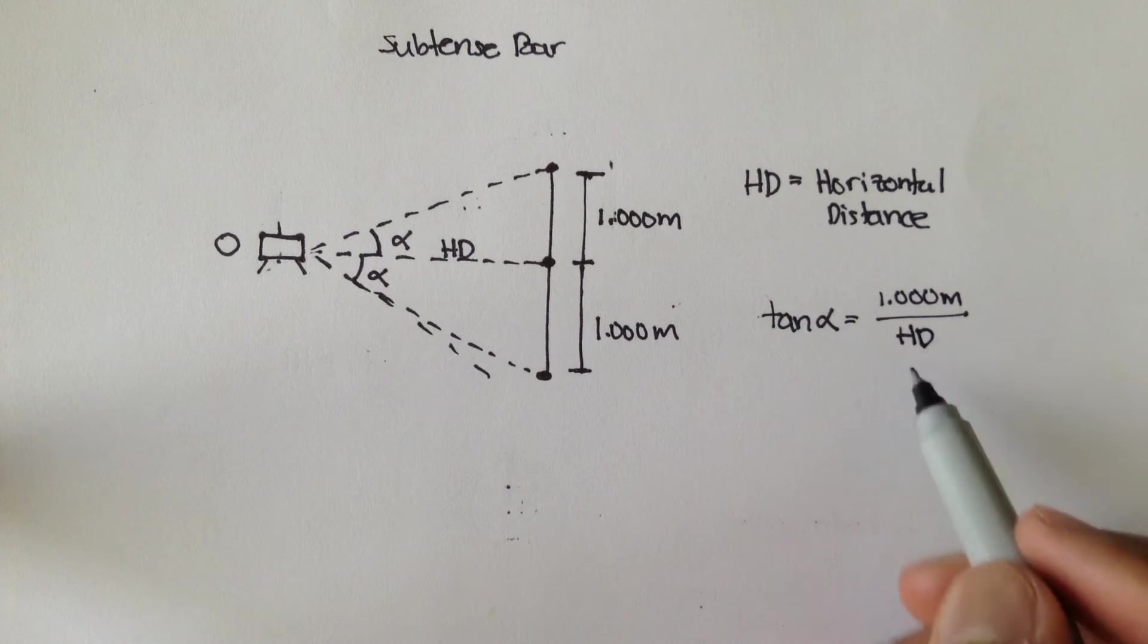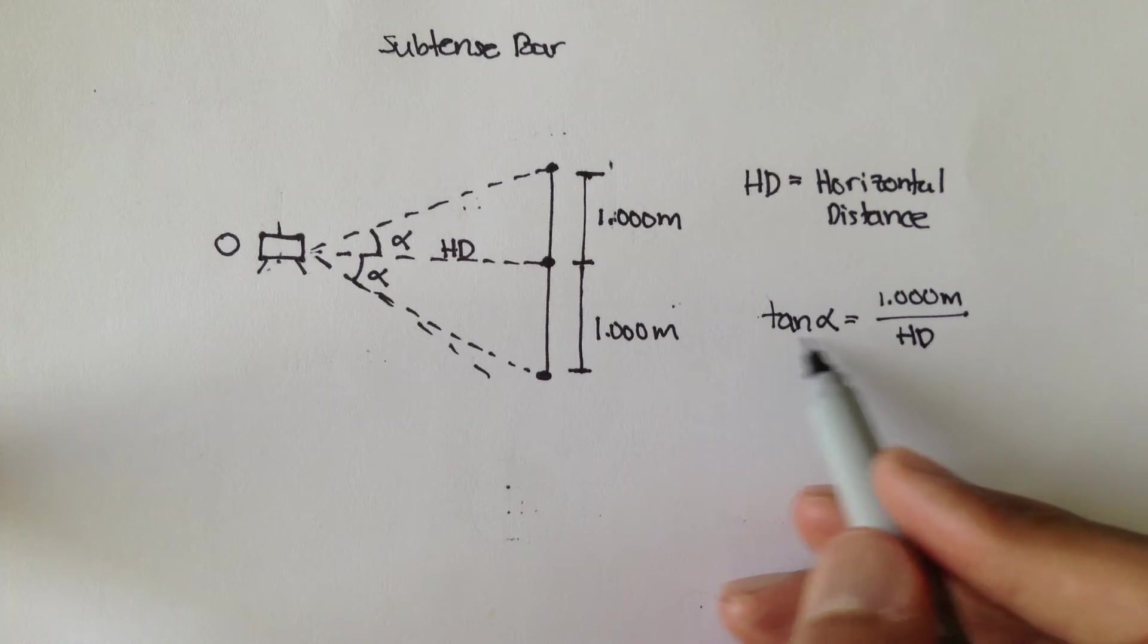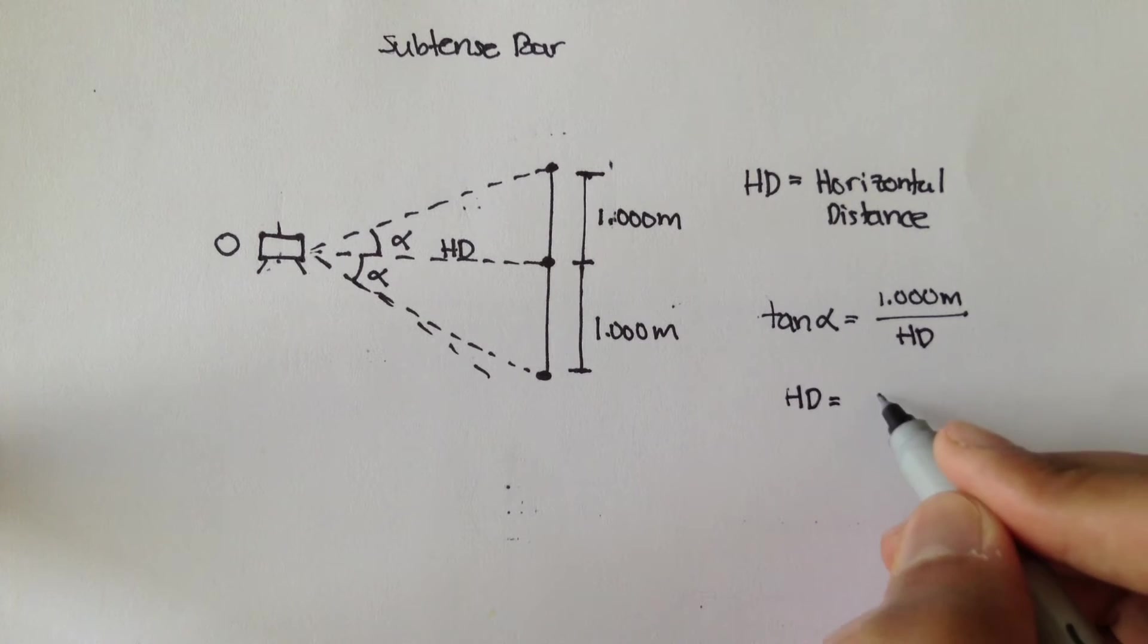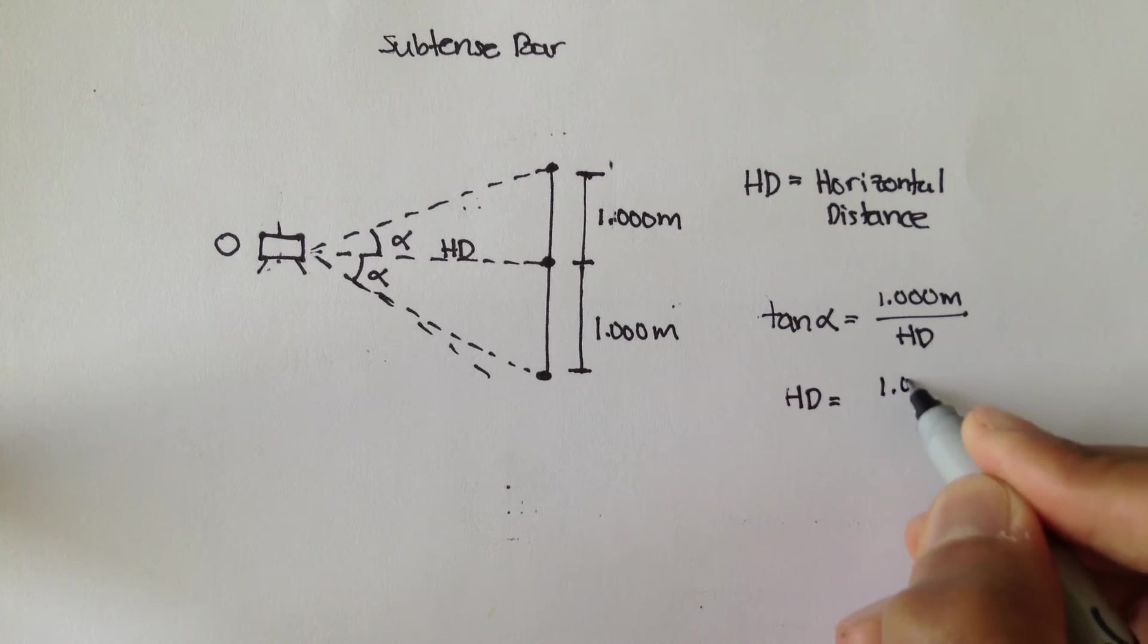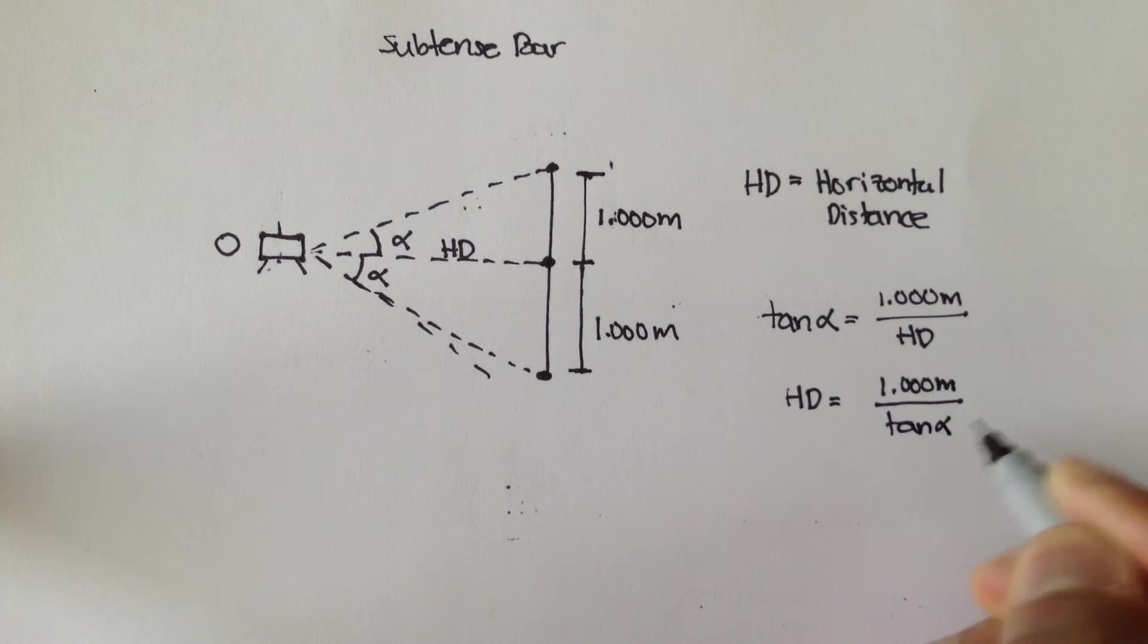If you multiply both sides by HD and divide by tangent of alpha, you'll get horizontal distance is 1.000 meters divided by tangent of alpha.